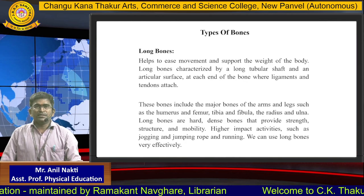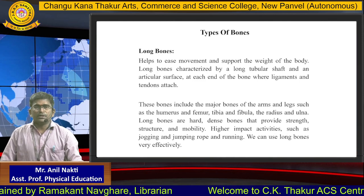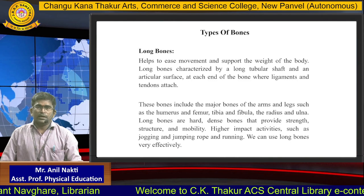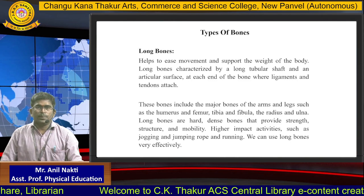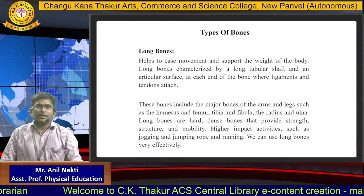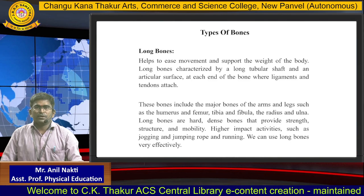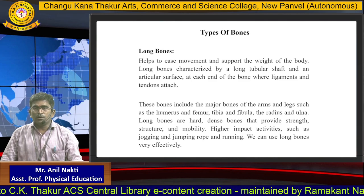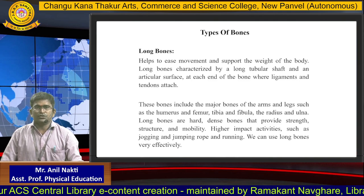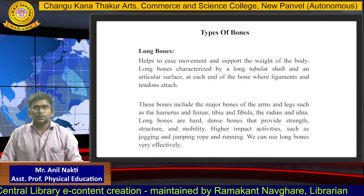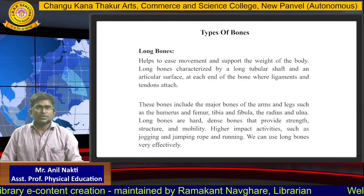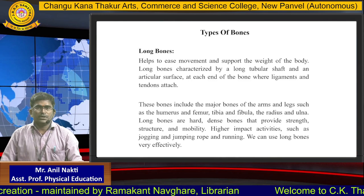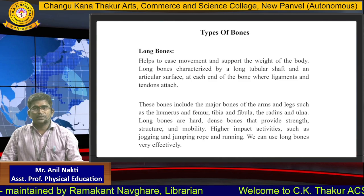Now we will see the types of bones. The first type is long bones. Long bones help to ease movement and support the weight of the body. Long bones are characterized by a long tubular shaft and an articular surface at each end of the bone where ligaments and tendons attach. These bones include the major bones of the arms and legs, such as the humerus and femur, tibia and fibula, radius and ulna.